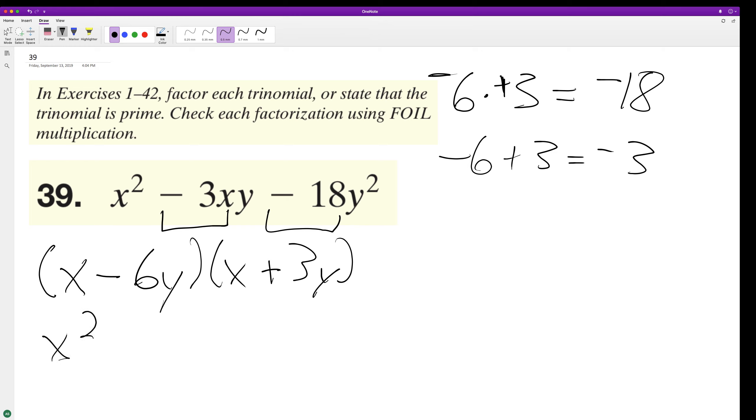So then this gives us x squared plus three xy minus six xy minus 18 y squared. Combine like terms, x squared minus three xy minus 18 y squared.